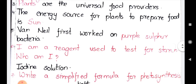The sixth question is: I am a reagent used to test for starch — who am I? The answer is iodine solution. Without iodine solution, you can't test the presence of starch. Iodine solution is very much important to test the presence of starch.